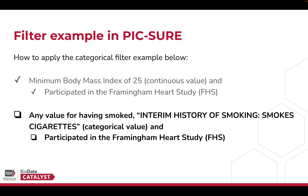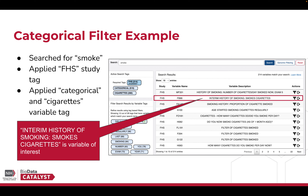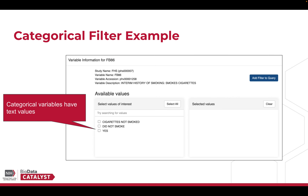Now let's apply a categorical filter. We want to find FHS study participants that responded to the question 'Interim History of Smoking — smoke cigarettes.' As we can see here, we have searched for my term of interest, 'smoke.' We have applied the FHS study tag and the categorical and cigarettes tags to narrow down the search results. Again, for more information about finding variables in PICTURE, please view the Basics Finding Variables video. Let's say that the variable we want to filter on is FB86 Interim History of Smoking — smokes cigarettes. We can click on the filter icon to open the variable filter modal.